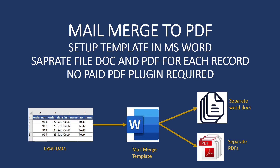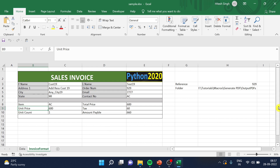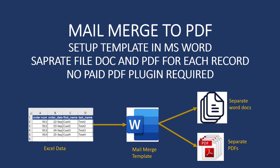Hello, welcome back to another video on email automation using Excel macros. We have already seen one macro where we generated PDFs from Excel data using a template. In this video, we are going to generate PDF output and MS Word documents for each record in Excel and save a different document for each record. Please hit the like button and subscribe to the channel for more automation videos using Excel macros, RPA automation, Power Automate, and Python.